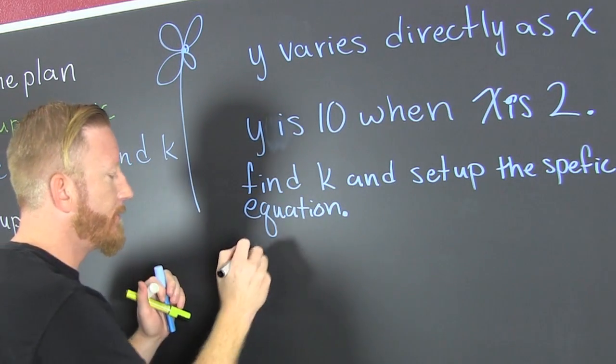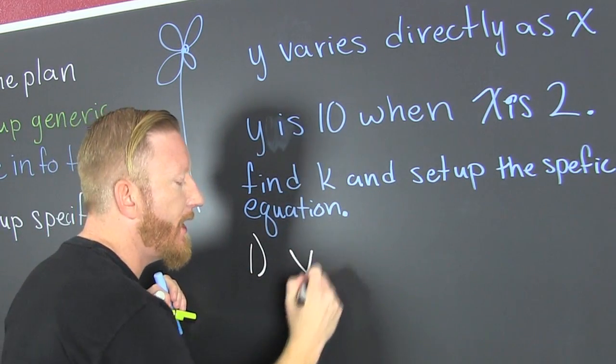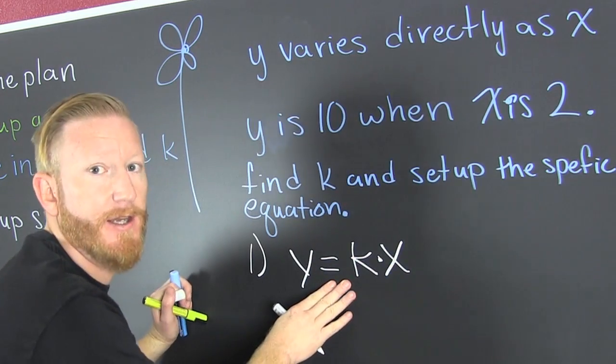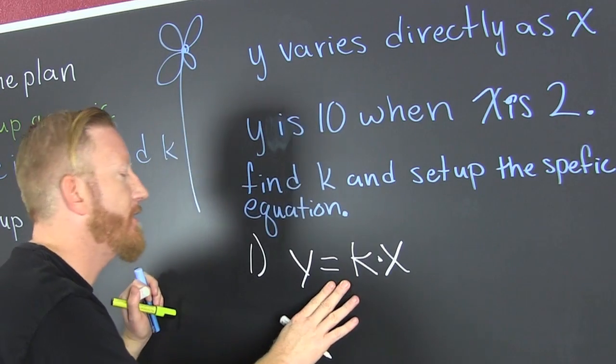Step one. Y varies directly as x. That's direct variation. In the other videos, we talk about inverse and joint variation.